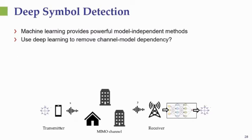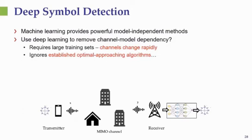However, the difficulty is that the advantages of machine learning typically come into play when we have very large training sets, which will not typically be the case in a communication environment that is rapidly changing. In such a setting, it will be impractical to collect large training sets every time the channel changes. Furthermore, although machine learning methods can work very well, very little is known about their optimality properties and the quality of solutions from a statistical perspective.